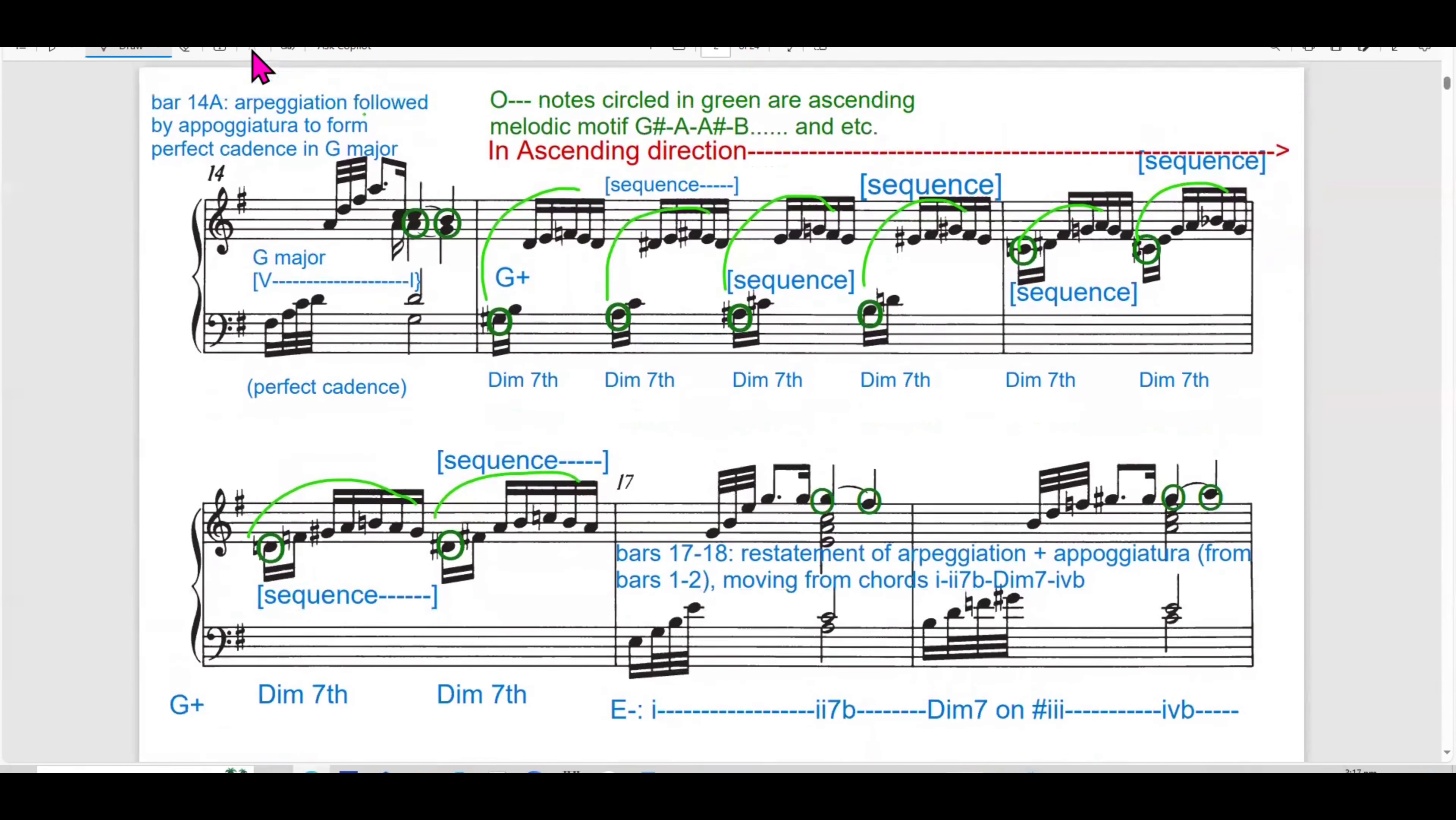The polyphonic writing in bar 1 to 13 is both intricate and fluid. Bach employs melodic imitation, counterpoint and sequence development to build complexity and drive the piece forward. The melodic imitation between right hand and left hand is a key feature here. Creating interaction between the voices and giving the piece its contrapuntal depth. Let's continue with the next page, bar 14 onwards.